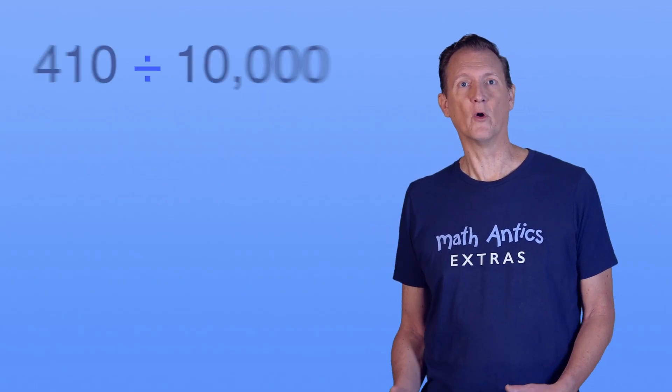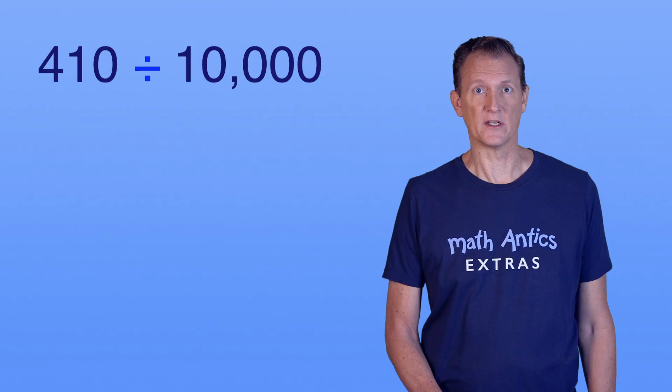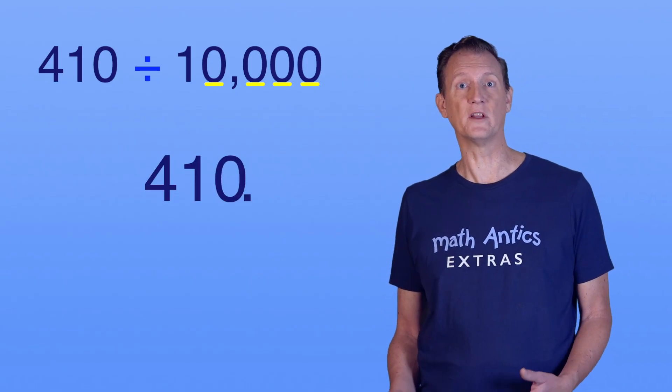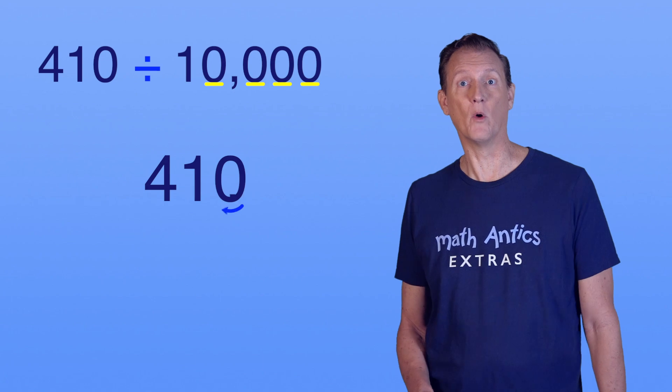Let's try another one. 410 divided by 10,000. 10,000 has 4 zeros, so we shift the decimal point to the left 4 places this time. 1, 2, 3, 4.